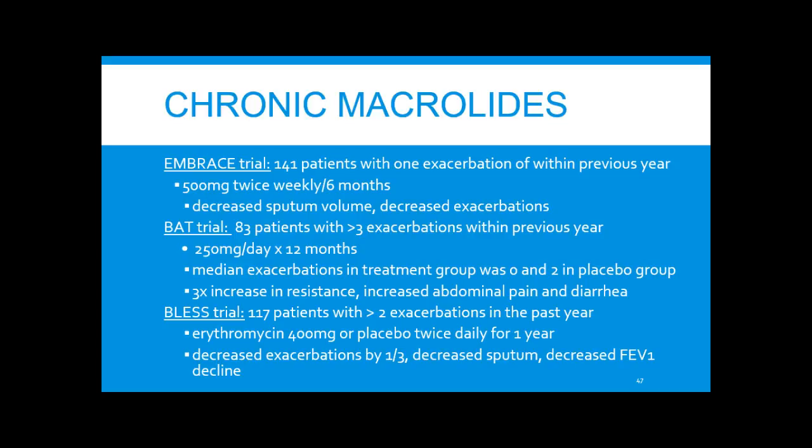There are three large trials regarding chronic macrolide use. The EMBRACE trial with 141 participants given azithromycin twice weekly over six months found decreased sputum volume and decreased exacerbations. The BAT trial with 83 patients given azithromycin 250 mg daily for 12 months showed a median of zero exacerbations in the treatment group versus two in placebo; however, there was over three times the increase in macrolide-resistant strep, plus increased abdominal pain and diarrhea.